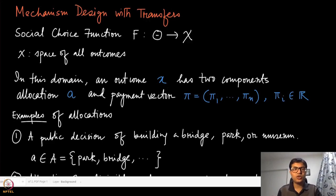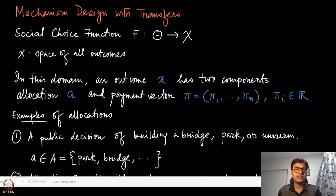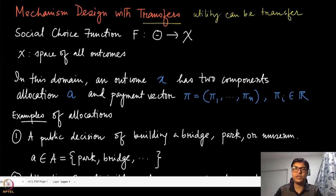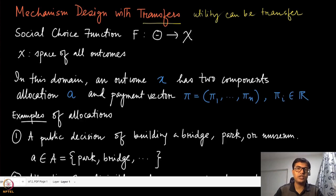Let us now start discussing one of the most popular areas of mechanism design, which is called mechanism design with transfers. This is a domain restriction, as we have discussed in the previous two cases, but this specific domain restriction gives us the opportunity to use something called transferable utility. Whenever we refer to transfers, we mean that the utility can be transferred, and the way this is done is through money — this is the first time we are going to use money, which is used to transfer utilities from one player to another.